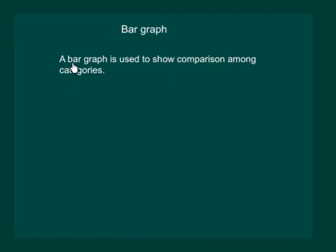A bar graph is used to show comparison among categories. Let us try to understand this by using an example.